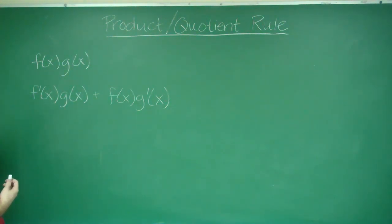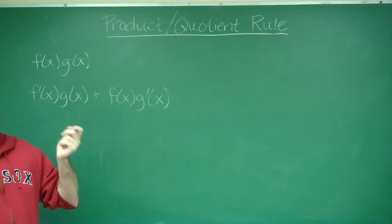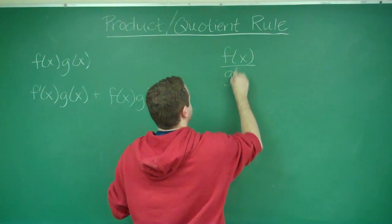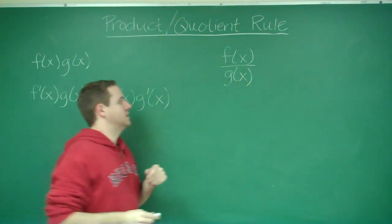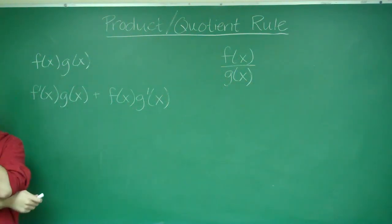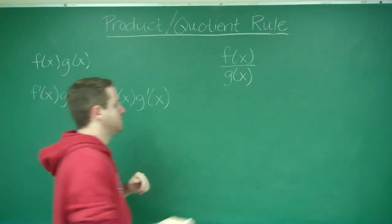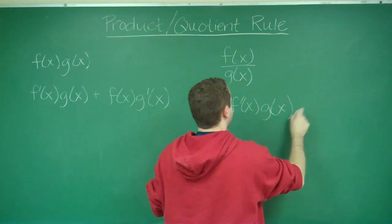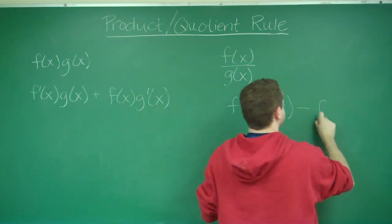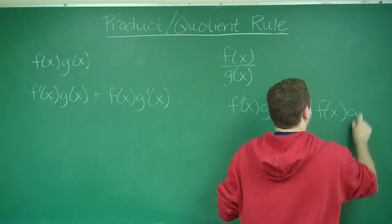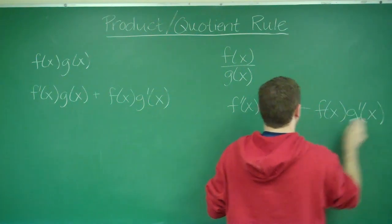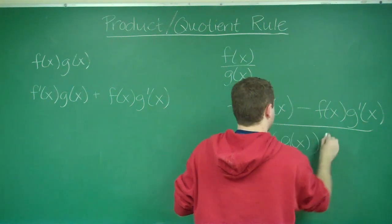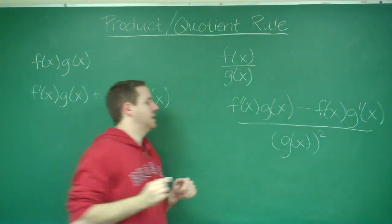The quotient rule is used when you have a quotient of two functions. So your function can be written as f(x) over g(x). The quotient rule states you get f'(x)·g(x) minus f(x)·g'(x), all over g(x) squared.